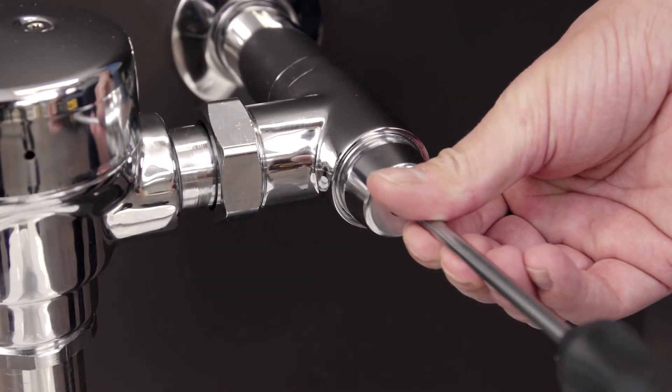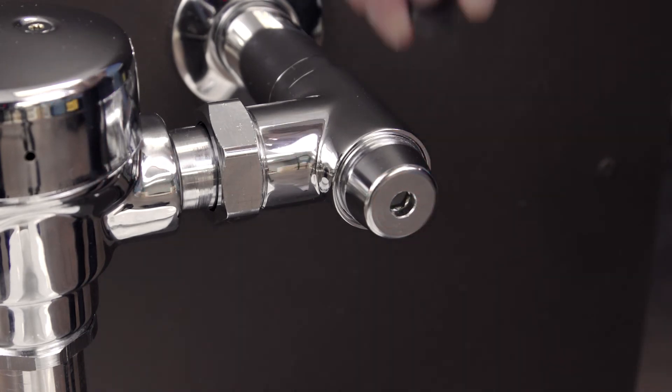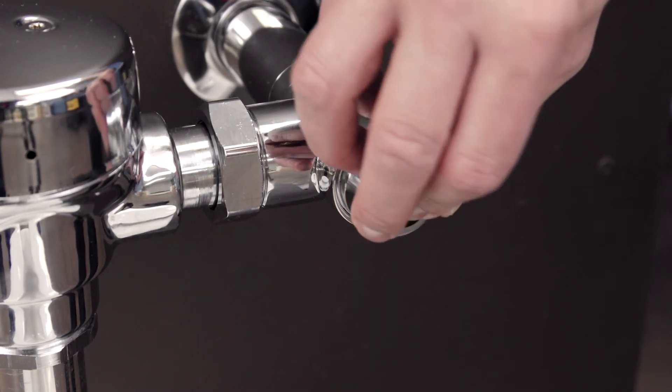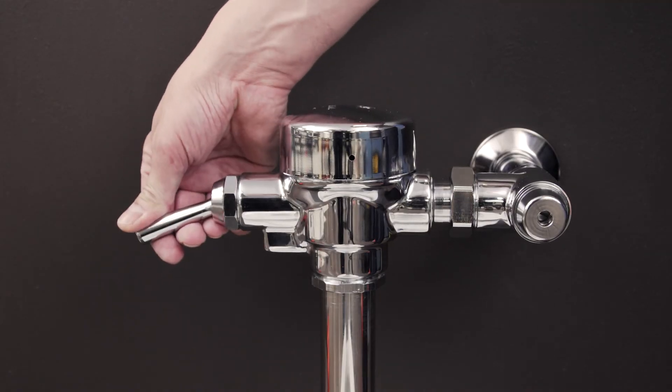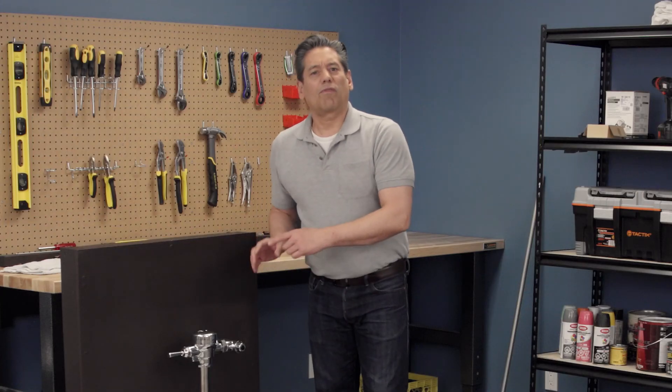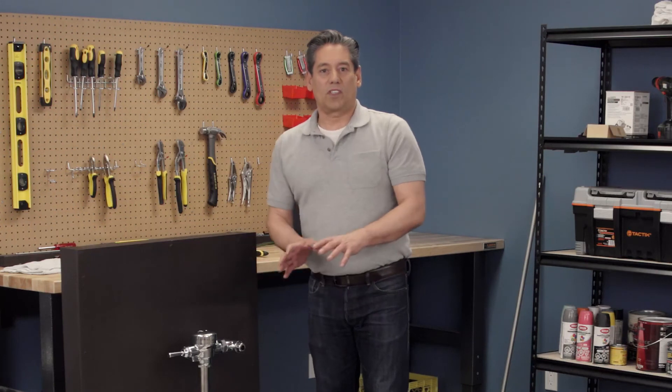Open the shutoff valve and replace the cap. Finally, test the flushometer and check for any leaks. The first flush will remove the air from the system. The second flush should function as normal.